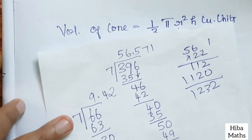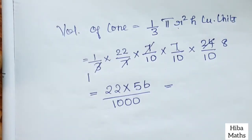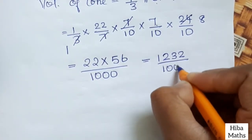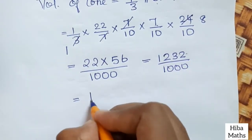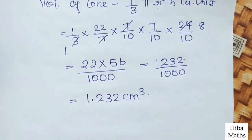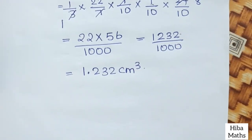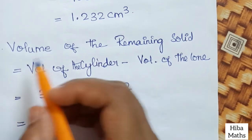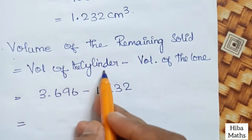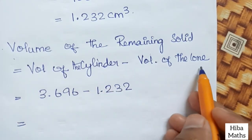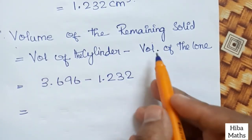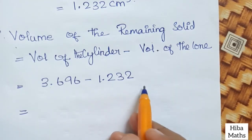The numerator result is 1232, divided by 1000, so the volume of the cone is 1.232 cm³. Now we calculate the remaining volume: volume of cylinder minus volume of cone — 3.696 minus 1.232.